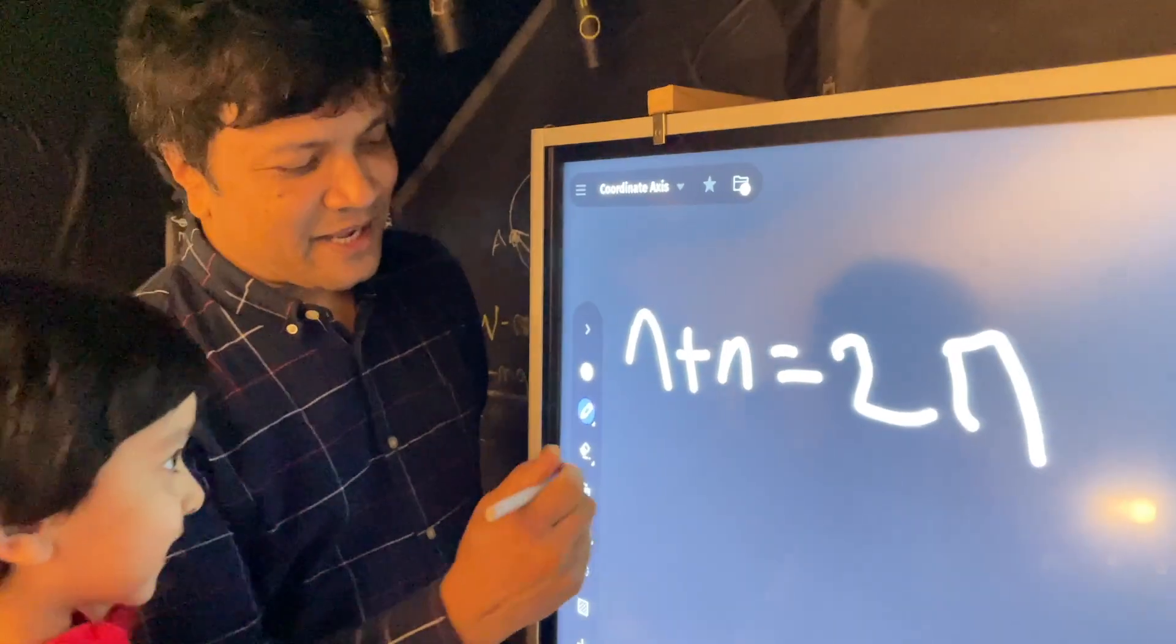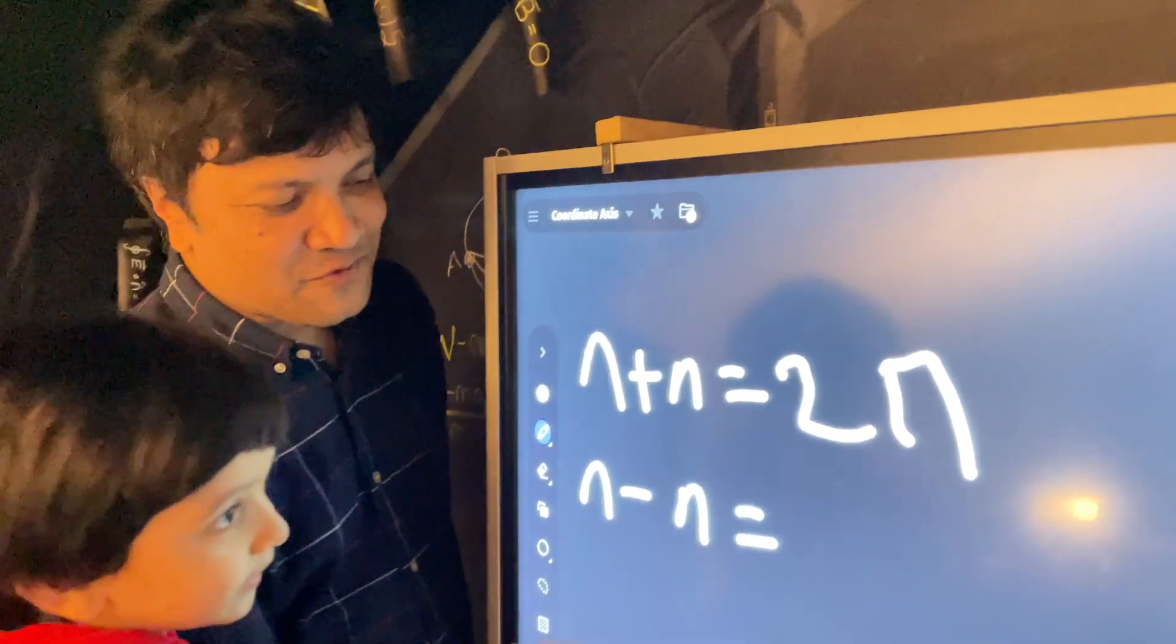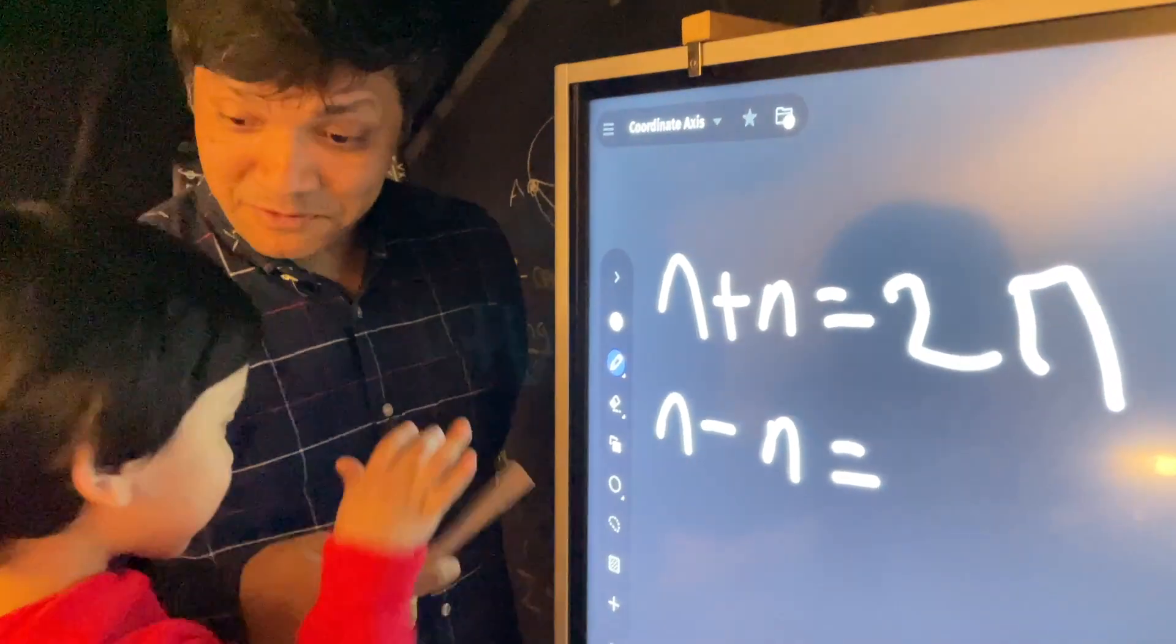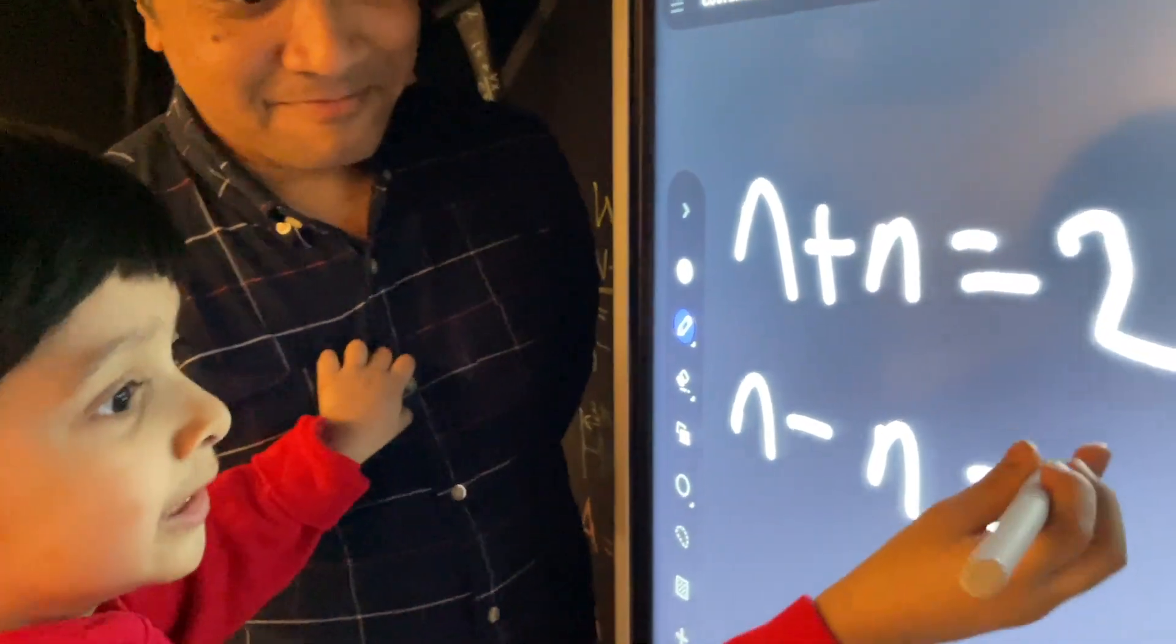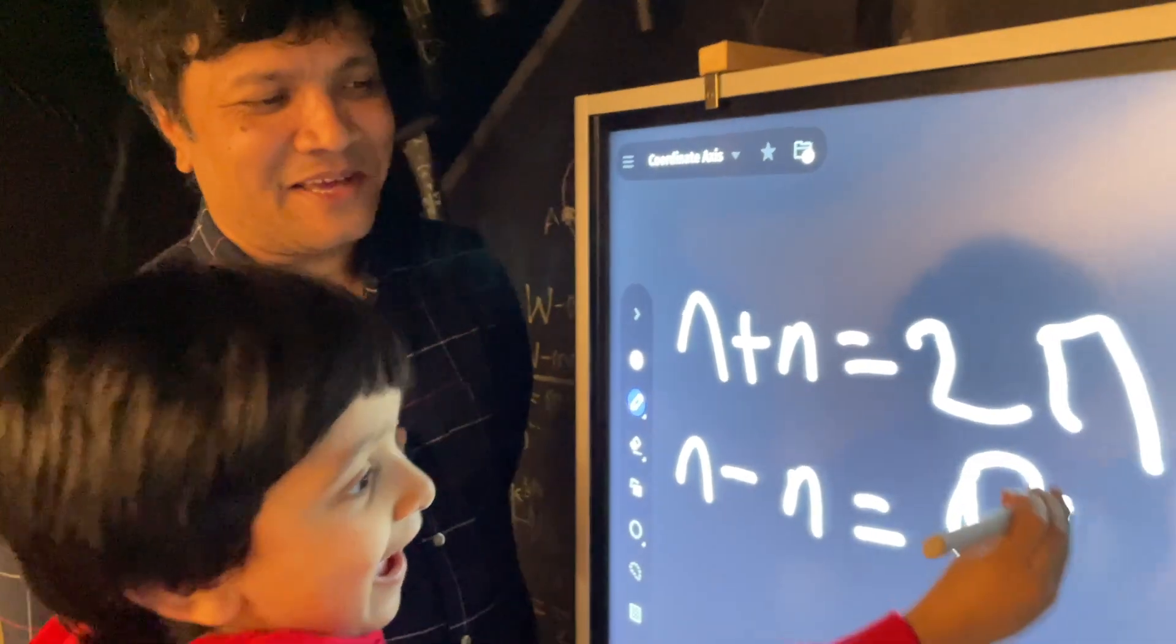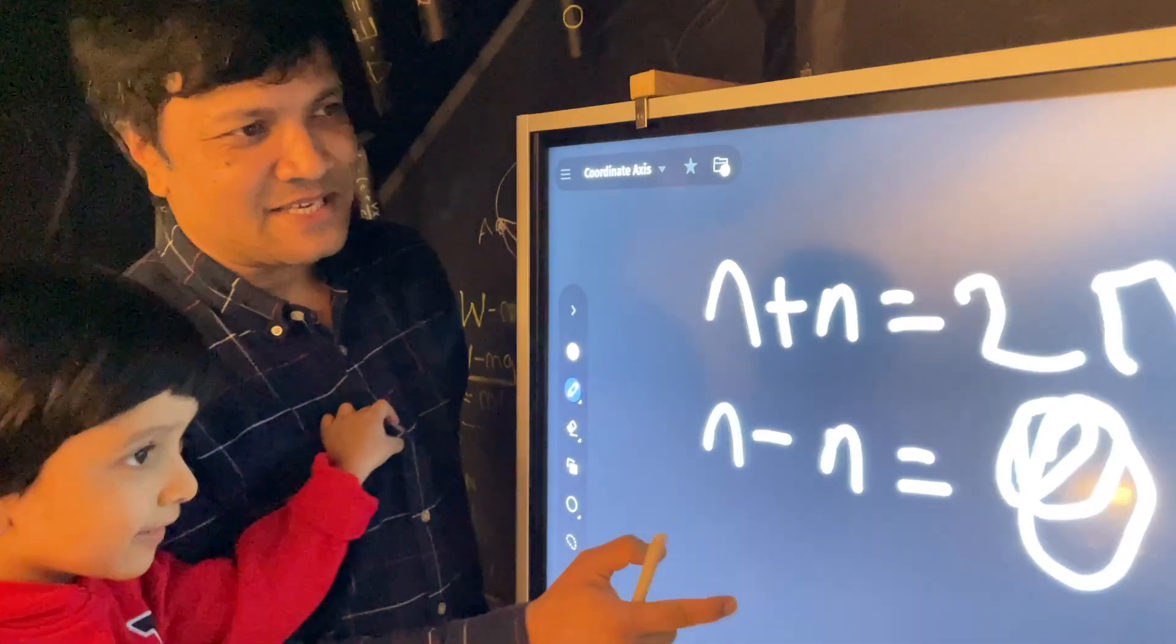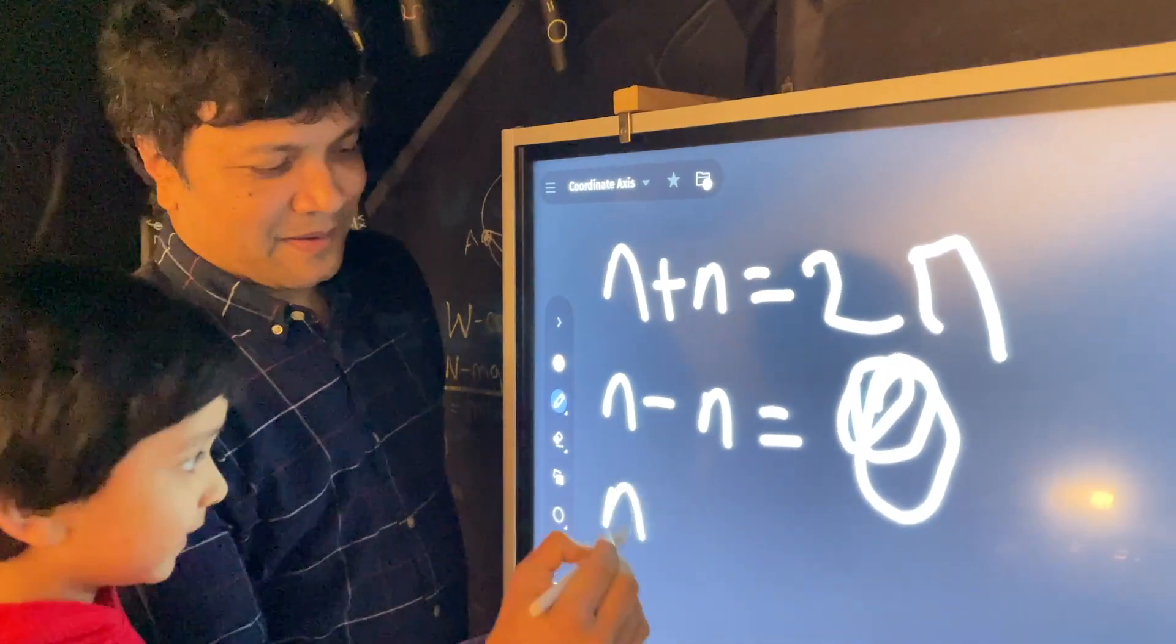All right. N minus n. Let's see. Let me try to trick him. What is n minus n? Little fellow. Zero. Can you write it? A big zero. He wants to write a big zero. Okay. All right. That's fine. I think that's big enough.